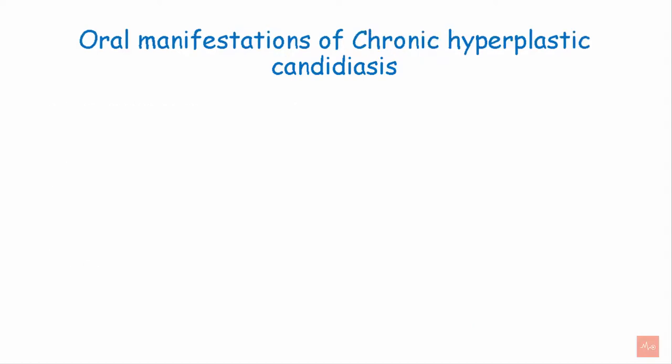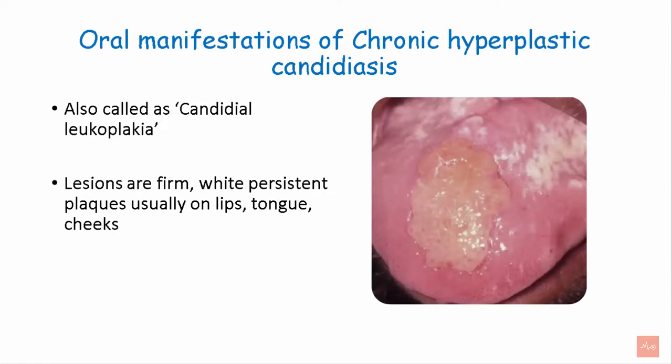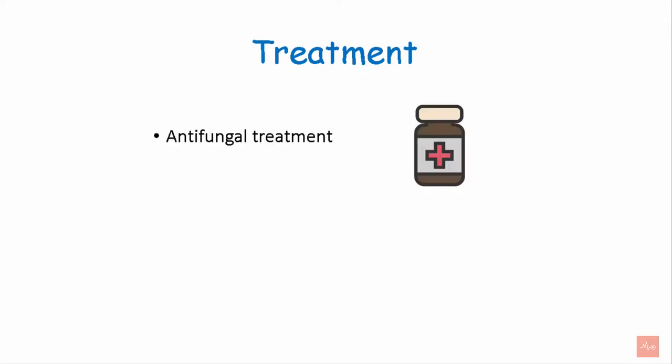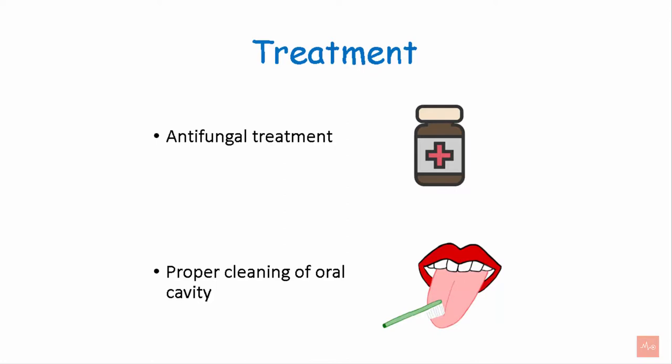Moving on to the oral manifestations of chronic hyperplastic candidiasis. It is also called candidal leukoplakia. Lesions are formed as white, persistent plaques, usually on the lips, tongue, and cheeks. It can be treated with antifungal therapy. The treatment for candidiasis overall is antifungal treatment and maintaining proper oral hygiene.